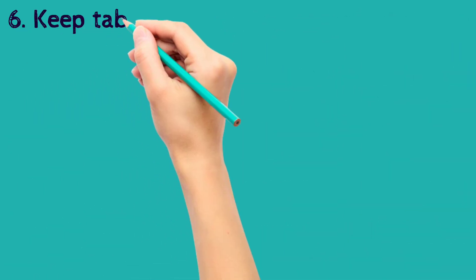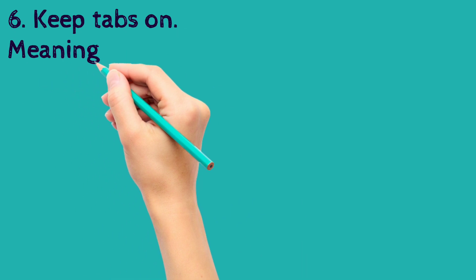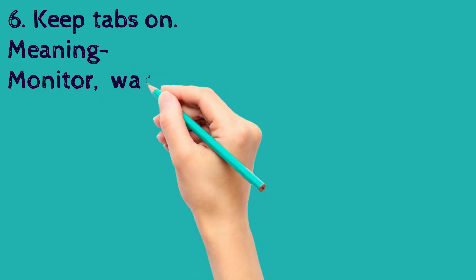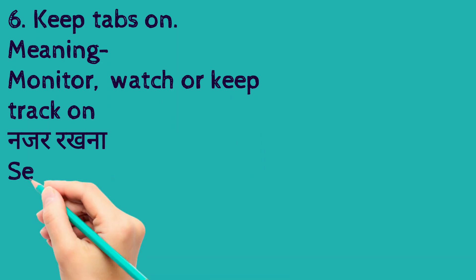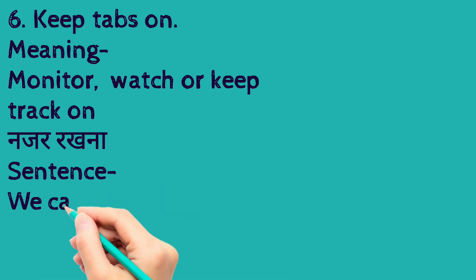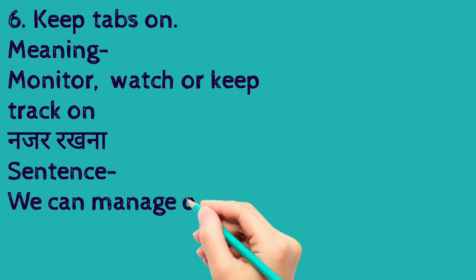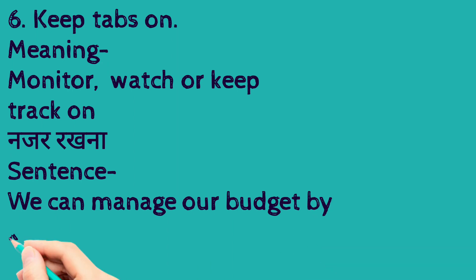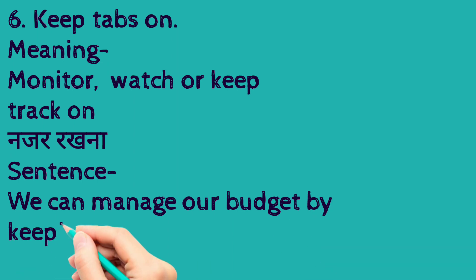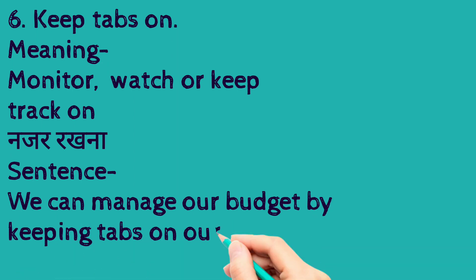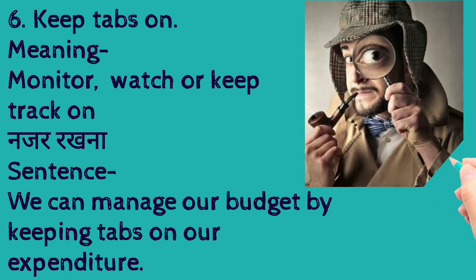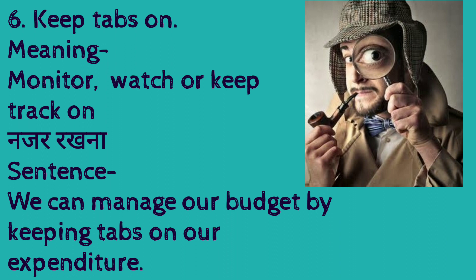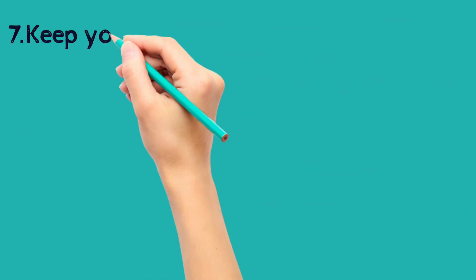The sixth one is 'keep tabs on'. It means to monitor, to watch, or to keep track on something. The sentence is: we can manage our budget by keeping tabs on our expenditure. So the meaning is to keep track on.